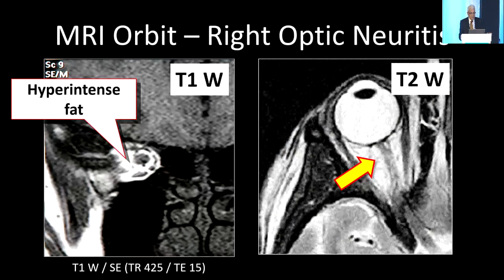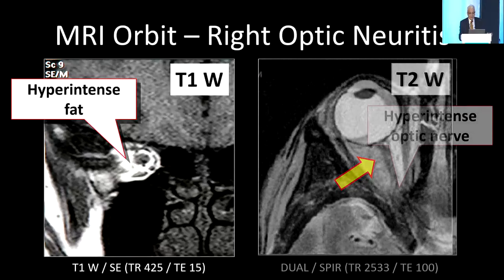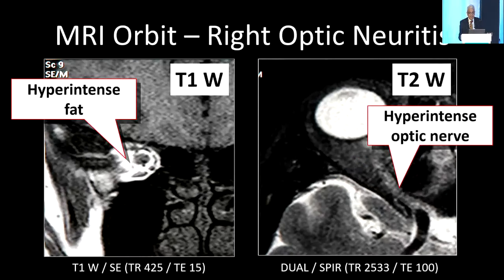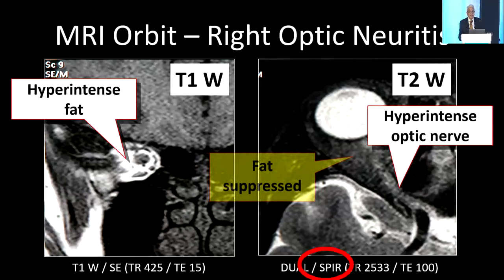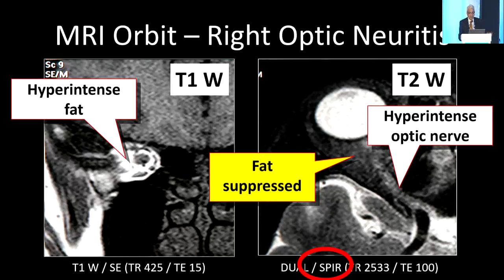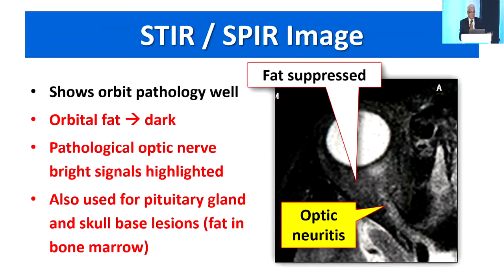On T1 the fat is hyperintense, and on modern T2 acquisitions fat also starts to look bright, so the optic nerve hyperintensity is not clearly seen. But if you suppress the fat using inversion recovery sequences — these protocols ending in 'IR' such as SPIR — you can see the nerve very clearly. This fat suppression is convenient for showing orbital pathology and skull-base lesions.